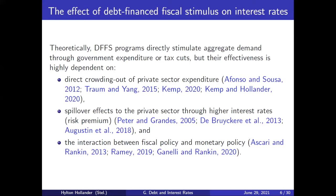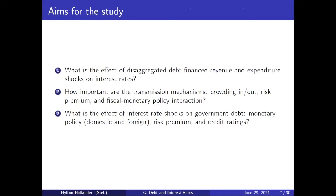I don't look at the role of the banks or richer financial sector dynamics — Konstantin Makrelov and some co-authors, Janse van Rendsburg, Dijakhe and Serena Moreno, and others have recently been taking a closer look at this. I'm focusing on these three channels and I want to ask three questions: What is the effect of disaggregated debt-financed revenue and expenditure shocks on interest rates? How important are these transmission mechanisms — the degree of crowding in and out, the risk premium, and the interaction of fiscal and monetary policy?